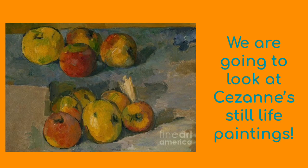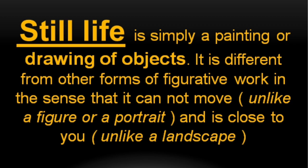But what is a still life? A still life is simply a painting or drawing of objects. It's different from other forms of work in the sense that the objects cannot move, unlike a figure or a portrait of a person. And it's also close to you, unlike a landscape.